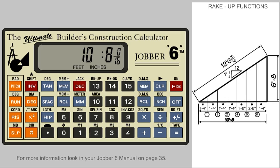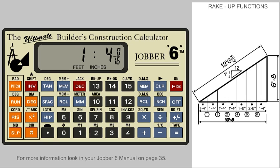Next, we need to set the default spacing we want to use along the horizontal run. Let's use 1 foot 4 inches as our default spacing. Enter 1 foot, 4 inches, and 0 sixteenths. To tell the calculator this is the spacing, press the Space key.